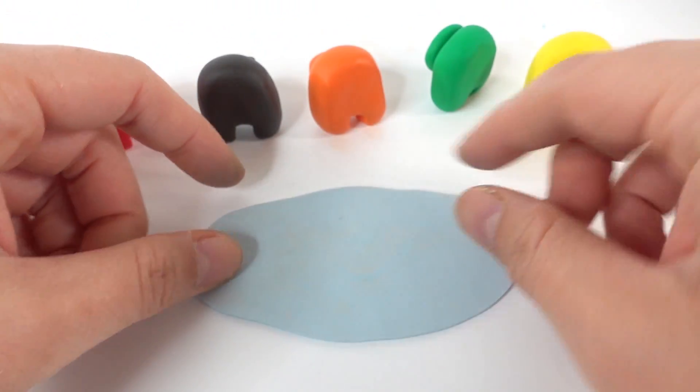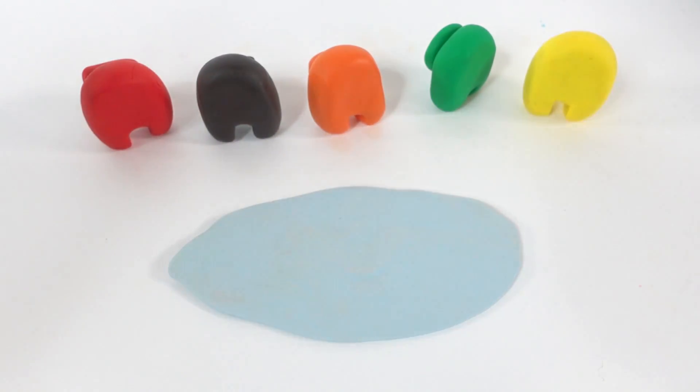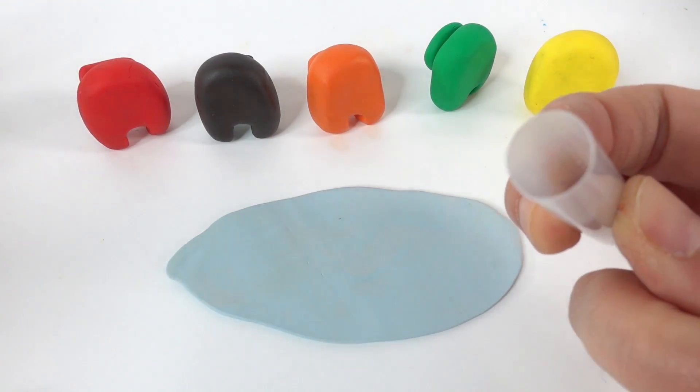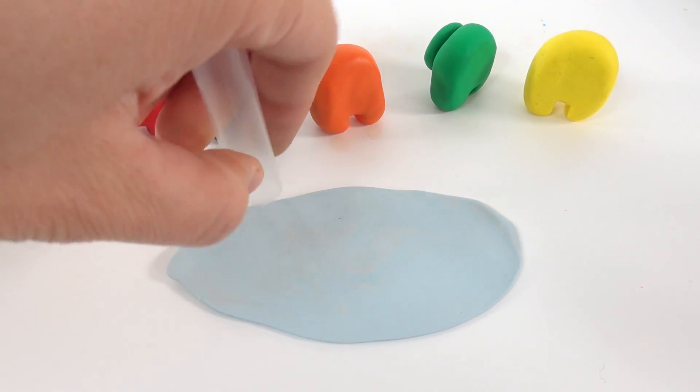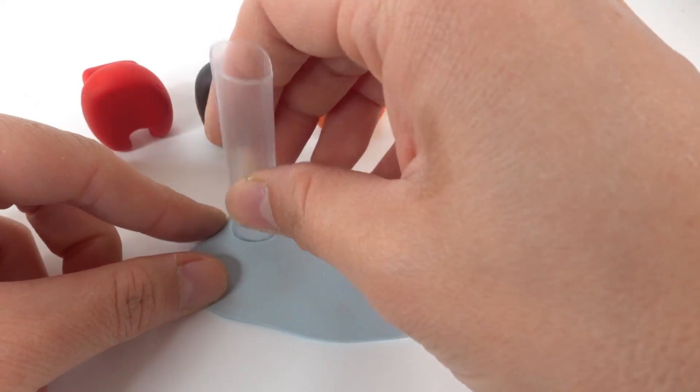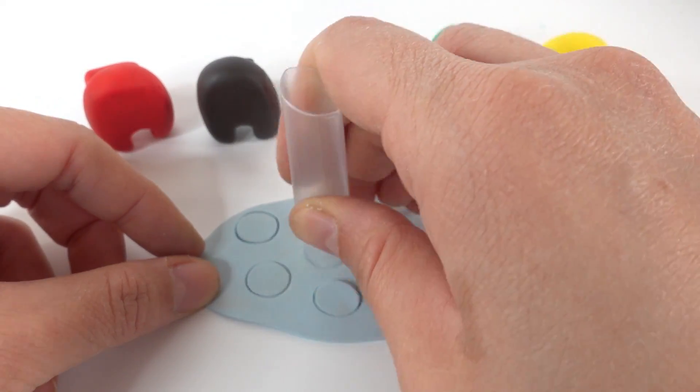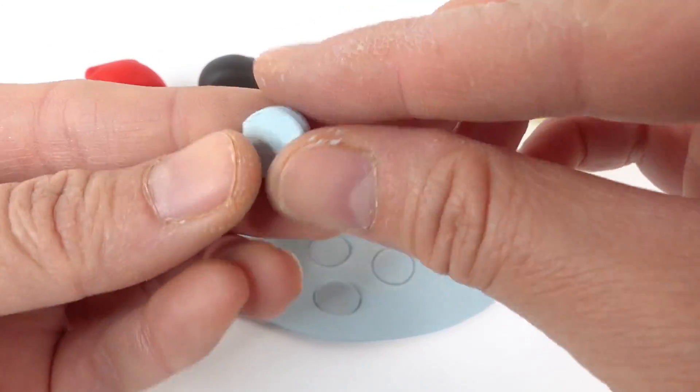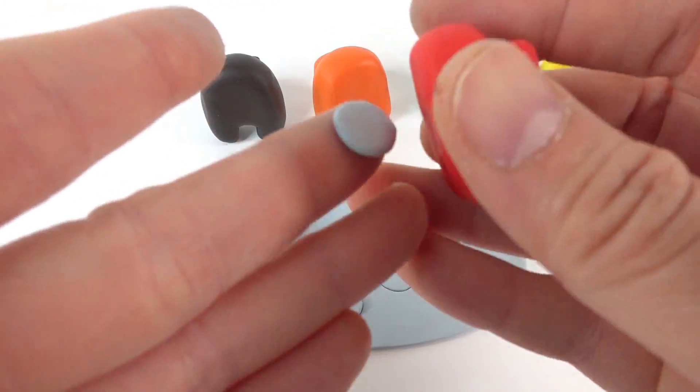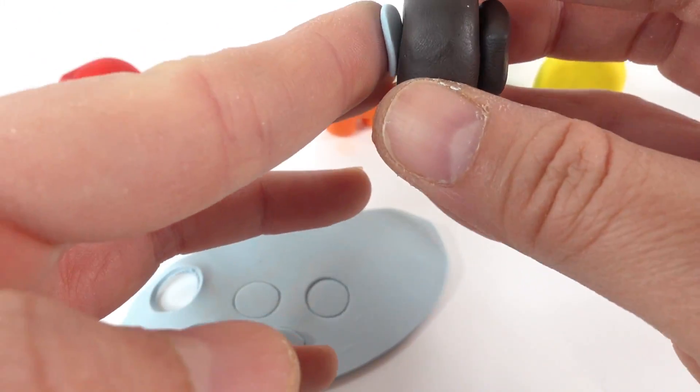Now for the face plate. I'm using a piece of light blue. Using a large straw, we're going to cut some ovals. And then we're going to take each oval, flatten it up, and shape it to the size that we want.